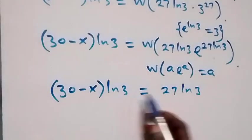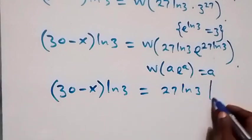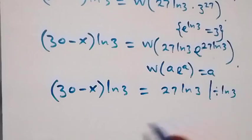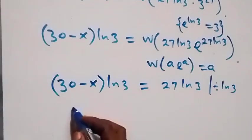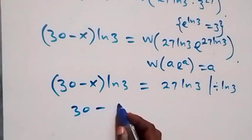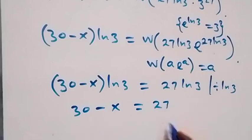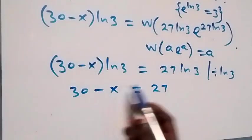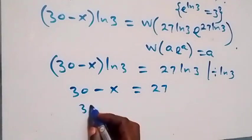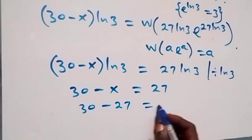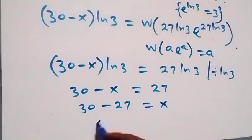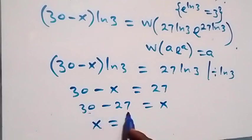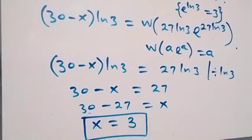From here we can divide both sides by ln 3. The ln 3 cancels out and we have 30 minus x equals 27. Taking minus x over, we get 30 minus 27 equals x, which gives x equals 3.